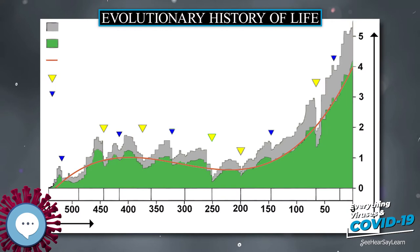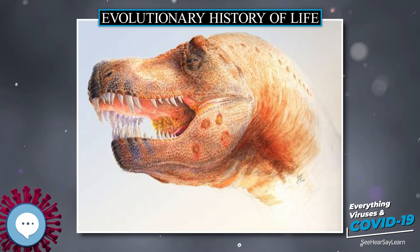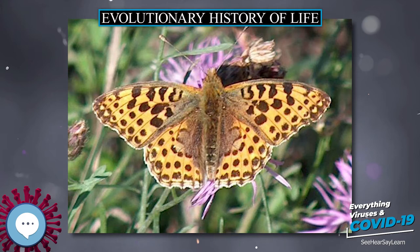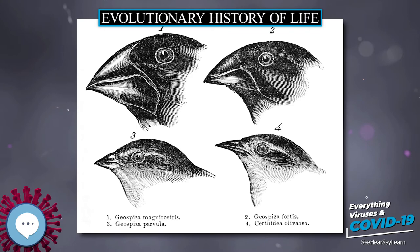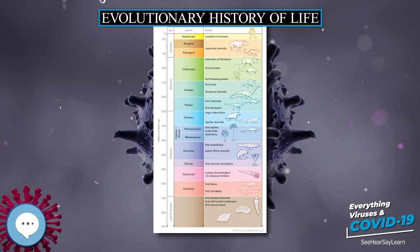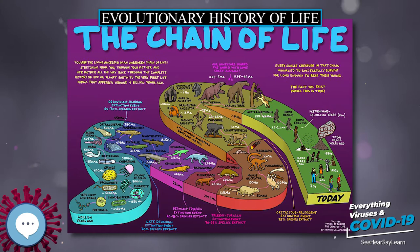Organisms based on alternative biochemistry may, however, be possible on other planets. Research on how life might have emerged from non-living chemicals focuses on three possible starting points: self-replication, an organism's ability to produce offspring that are very similar to itself; metabolism, its ability to feed and repair itself; and external cell membranes, which allow food to enter and waste products to leave, but exclude unwanted substances. Research on abiogenesis still has a long way to go, since theoretical and empirical approaches are only beginning to make contact with each other.